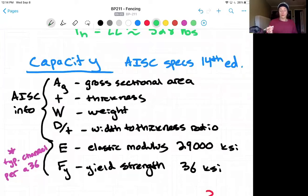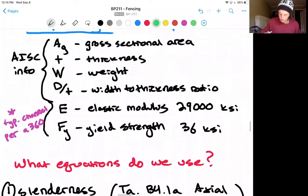We're going to need to find our gross sectional area, thickness, our weight, our width to thickness ratio, and we'll take the elastic modulus and yield strength of a typical channel per the A360 specifications.